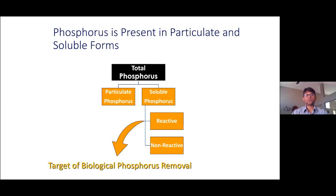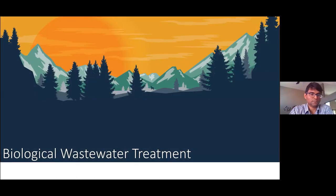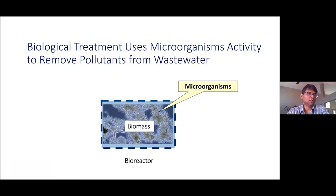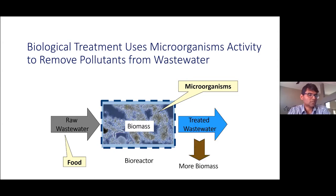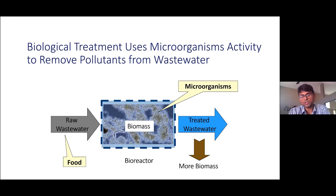Now going into the overall biological wastewater treatment: for any biological treatment, it uses a microorganism and reactor. You have a reactor where you have a biomass or microorganism. The raw wastewater comes into a bioreactor, the reaction occurs, and you start producing the biomass. The treated water goes out, and with the reaction you produce more biomass, which is recycled back into the system to maintain a certain biomass level. This is an overall view of how biological treatment works.